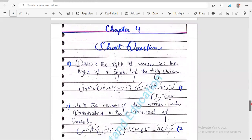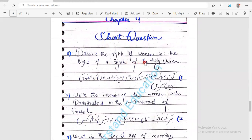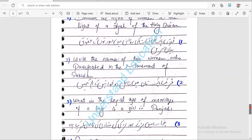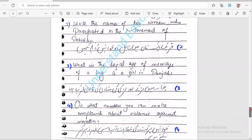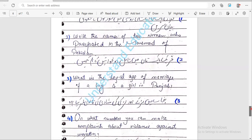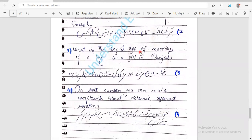Last chapter, chapter number four short questions important: Describe the rights of women in the light of the ayat of the Holy Quran. Question number two: write the names of two women who participated in the movement of Pakistan. You must remember which two women were in the forefront in the movement for Pakistan. What is the legal age of marriage of a boy and a girl in Punjab? Question number four: On what numbers you can make complaints about violence against women?